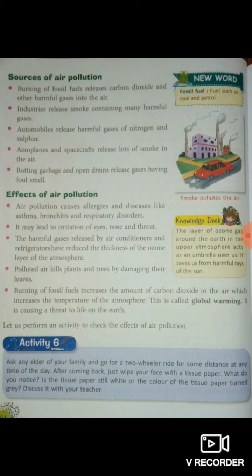Polluted air kills plants. Burning of fossil fuels releases large amounts of carbon dioxide, which increases the temperature of the atmosphere and therefore causes global warming, threatening life on planet Earth. Underline this point: burning of fossil fuels increases the amount of carbon dioxide in the air, which increases the temperature of the atmosphere — this is called global warming.